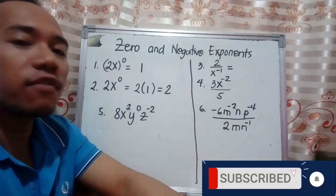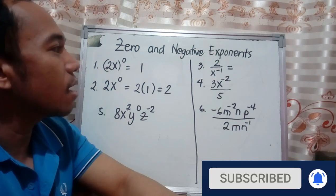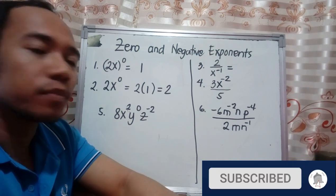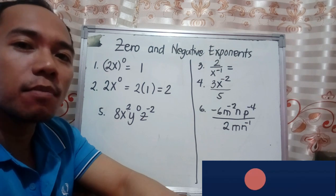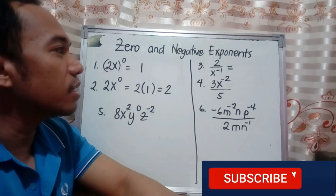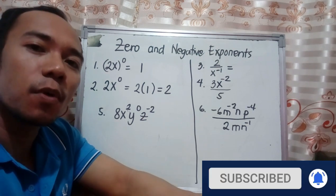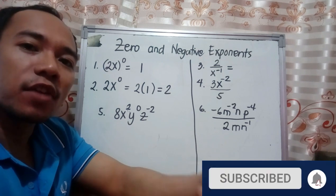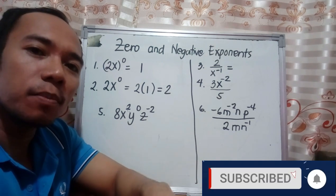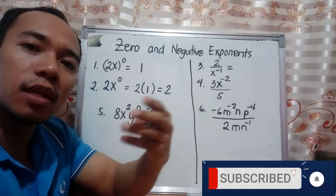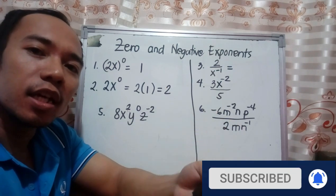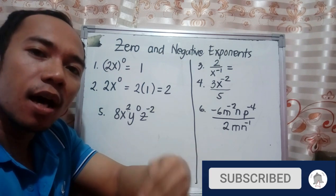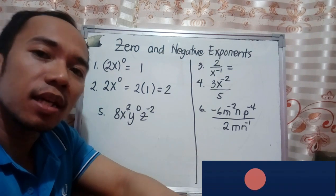Next is negative exponents. For the third example, we have 2 over x raised to negative 1. You have the negative exponent at the denominator. A negative exponent means reciprocal — if it is at the denominator, it will be put at the numerator. If it is at the numerator, you will put it at the denominator.